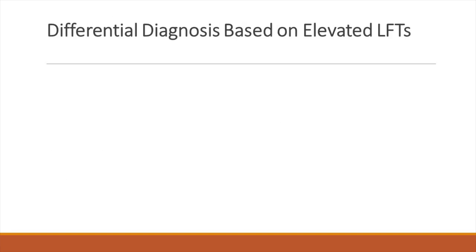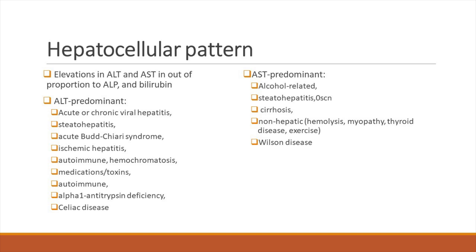Based on these different patterns of LFTs and parameters, we come to a few differential diagnoses. The first is your hepatocellular pattern of liver injury — here your ALT and AST are disproportionately high to ALP and bilirubin. Diseases which usually give us a clue: if SGPT is higher, we expect viral hepatitis, ischemic disease, autoimmune disease, hemochromatosis, and drug-induced liver disease. SGOT higher than SGPT is usually seen in alcoholic liver disease, cirrhosis sometimes, and non-hepatic causes such as hemolysis, myopathy, thyroid disease, exercise, and also in Wilson's disease sometimes.